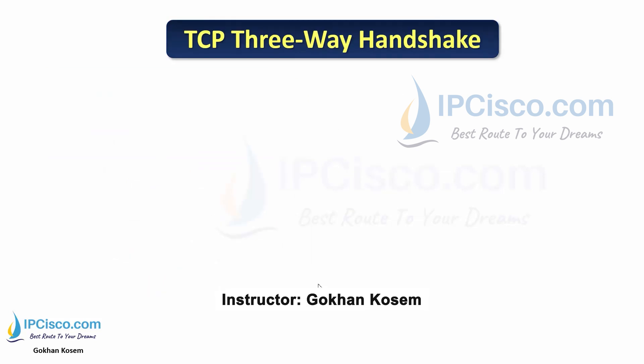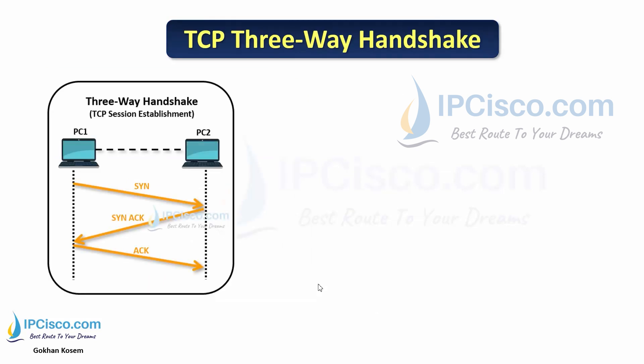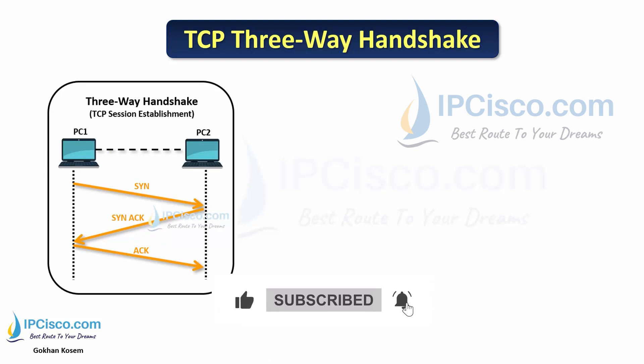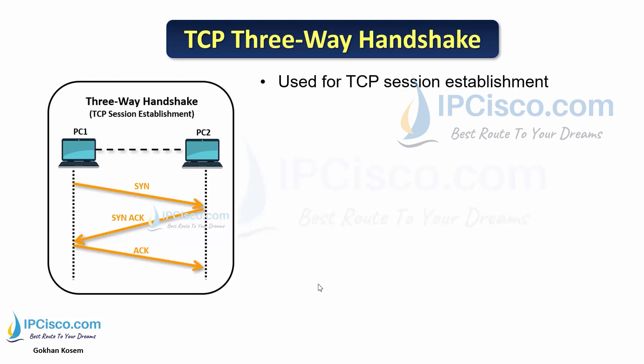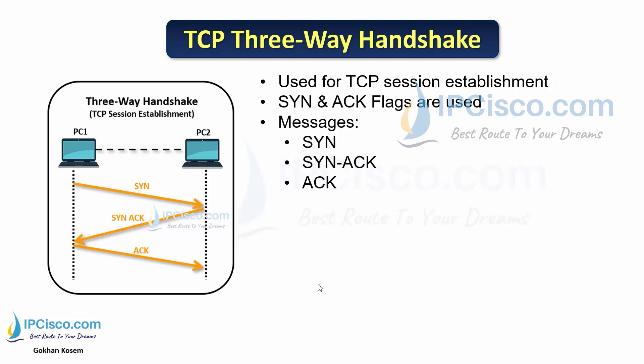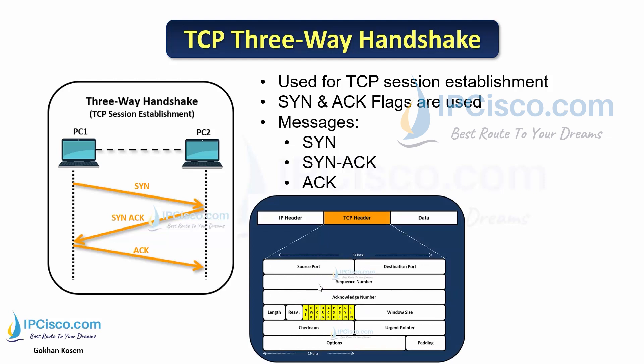Here is the most important mechanism of TCP: the three-way handshake. This is the mechanism of TCP session establishment. One side sends a packet by setting the SYN bit to 1, and the other side receives it and sends another packet by setting the SYN and ACK flags to 1. Lastly, the first sender sends a packet by setting the ACK flag to 1. You can check the TCP header and the flags used during this process.